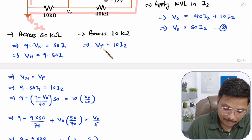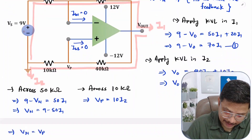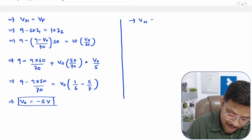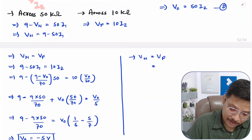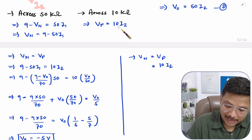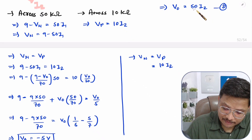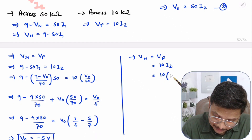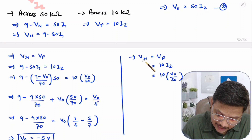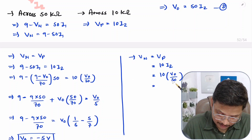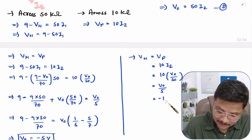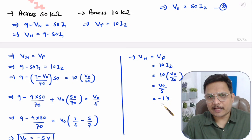Substituting, Vp equals 10 times (V0/50) equals V0/5. With V0 equals minus 5, Vp equals minus 1 volt. Since Vn equals Vp, we can say Vn equals Vp equals minus 1 volt. That is how we can simply solve this.